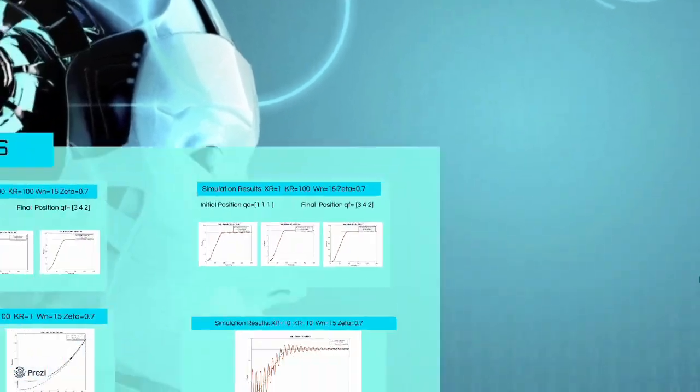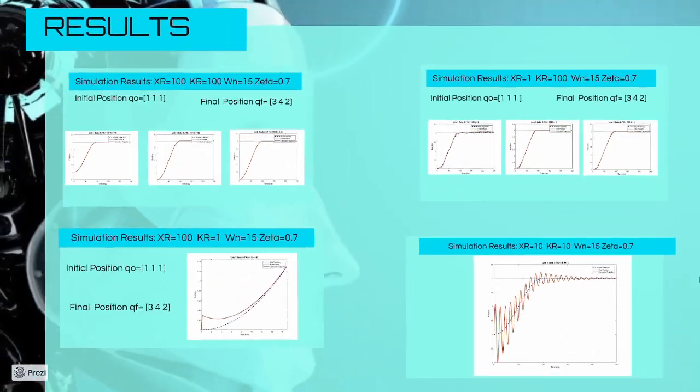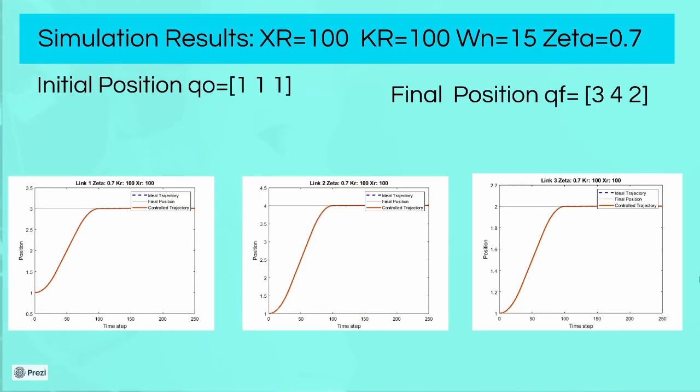Now, let's talk about the simulation result. If we use a high gear ratio with a high rejection factor, we can see that in this case, we obtain the best behavior, since the control trajectory will follow exactly the ideal one.